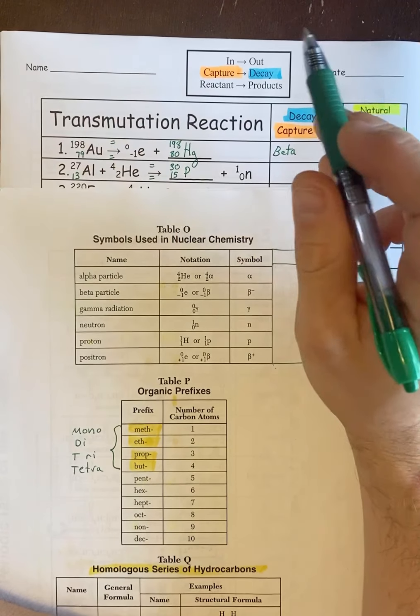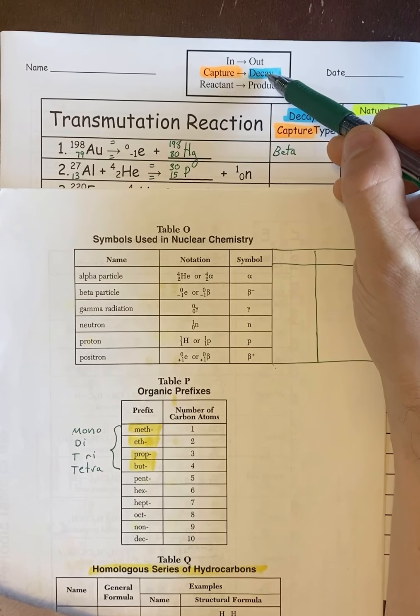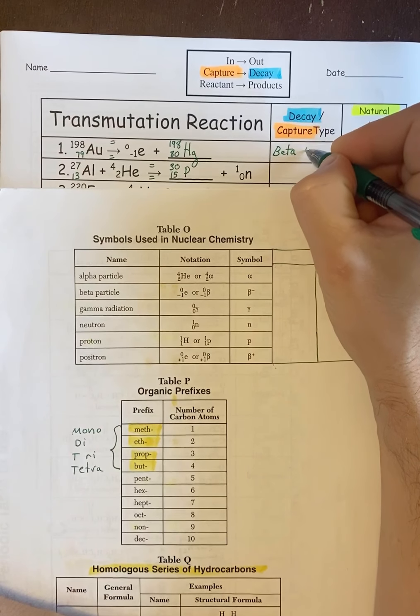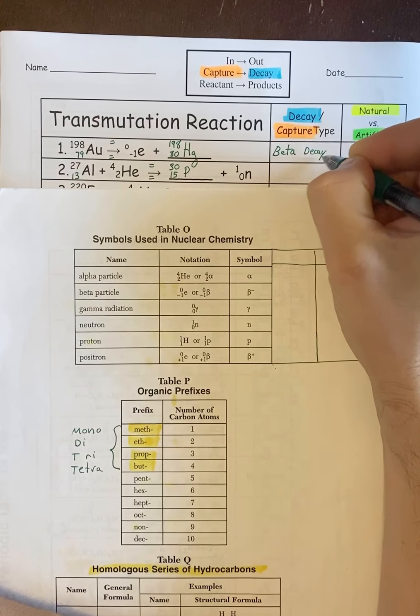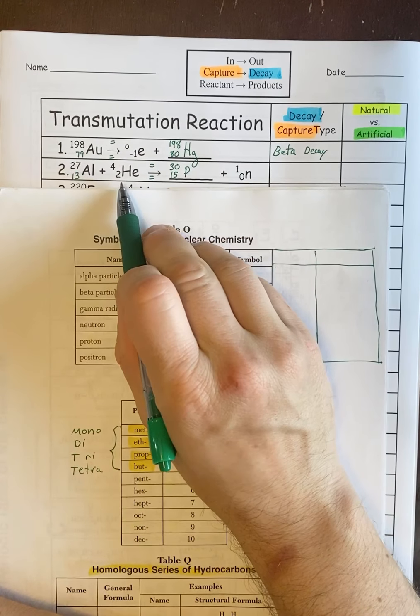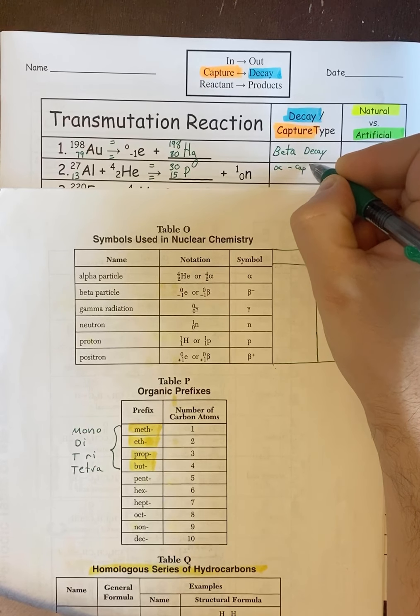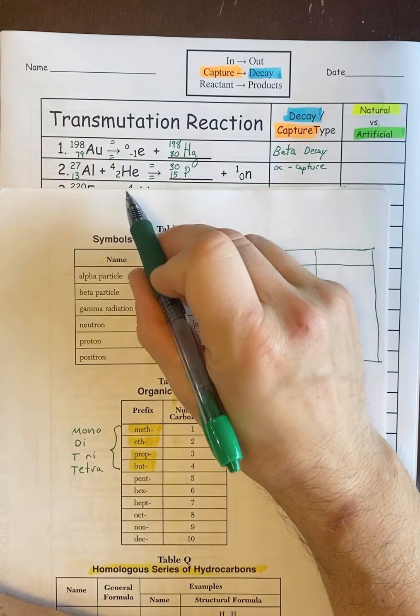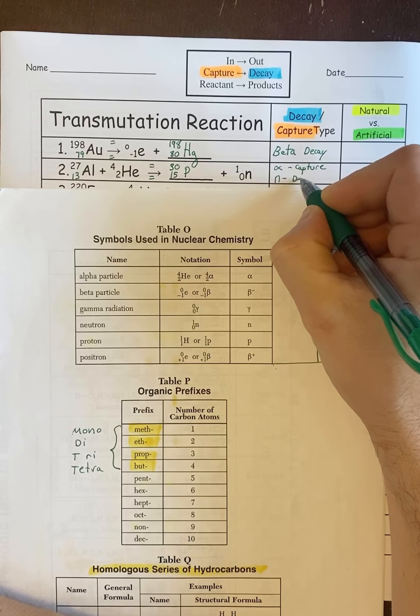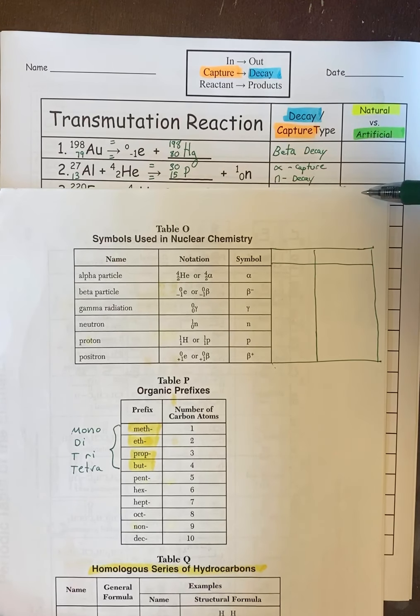Now is it capture or decay? The way we figure that out is simple. If the particle from table O is on the right side of the arrow it's called a decay. So since this beta is on the right of the arrow it's beta decay. Now for this one the alpha is on the left on problem 2. So that makes it alpha capture, but also the neutron is on the right so that makes it neutron decay. So there's more than one answer for number 2.